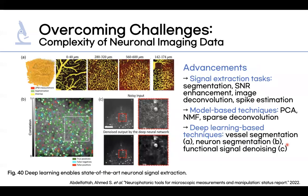The second challenge that computational imaging aims to overcome deals with the complexity of large-scale multidimensional neuronal imaging data. To overcome this, many advanced computational algorithms have been developed, allowing the performance of various signal extraction tasks such as segmentation, enhancement of SNR, image deconvolution, and spike estimation.